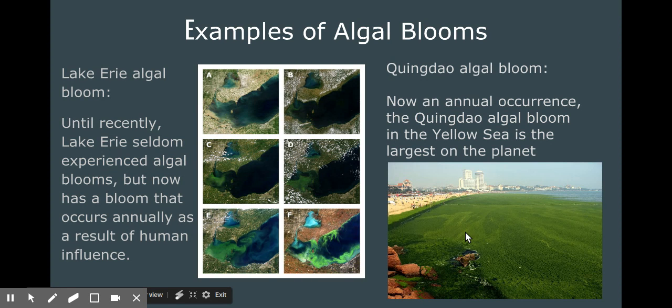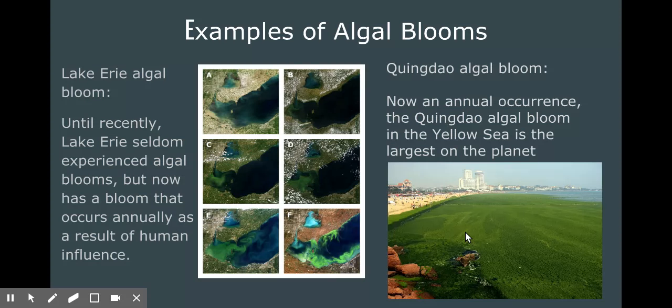The photo on the right is that of the coast of Qingdao, China, where an algal bloom sweeps in each year from the Yellow Sea. The algae isn't actually harmful at first and Qingdao residents actually go and swim in the bloom for a short while, but soon the algae begins to decompose producing dangerous toxins that could cause serious harm to people and other organisms.